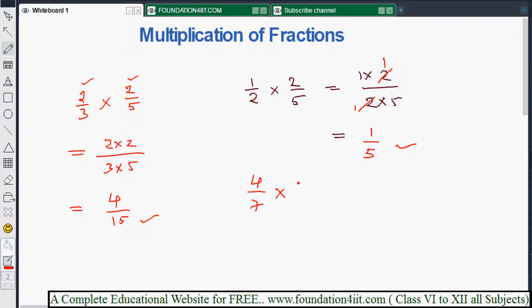4 by 7 times 3 by 4. Now 4 into 3 - if you multiply directly, you can cancel in the question itself, otherwise you can multiply. 4 into 3 is 12 by 7 into 4 is 28.